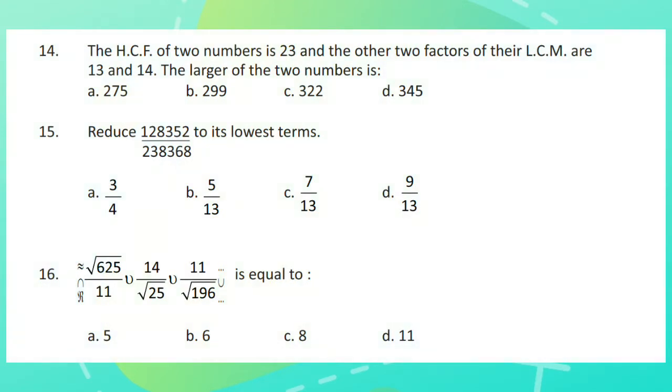Question 14. The HCF of two numbers is 23 and the other two factors of their LCM are 13 and 14. The larger of the two numbers is?